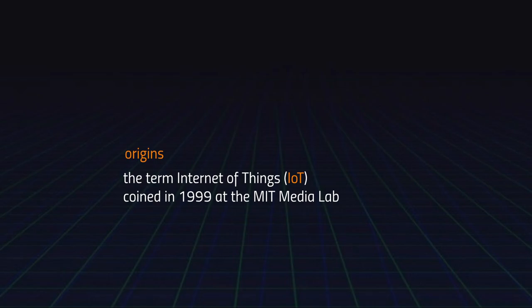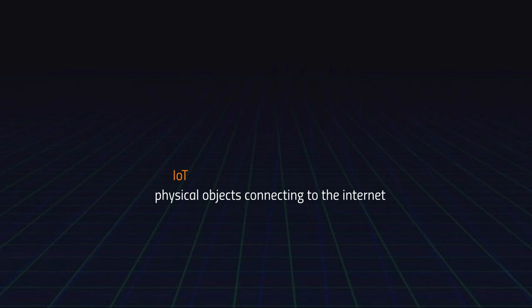Then you expand to personal computers, where suddenly there is a computer in every home and hundreds of computers in offices everywhere. Then you expand to smartphones — now there is not only a computer in every home, but a computer in every pocket and every bag, often more than one. The next stage that follows is other devices, other objects that could potentially be easily connected to the internet and integrated into the network. This is the next stage of the evolutionary development of the internet, and Kevin Ashton termed it the Internet of Things — on a very basic level, it stands for physical objects connecting to the internet.